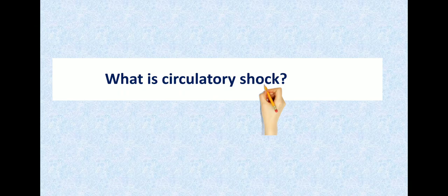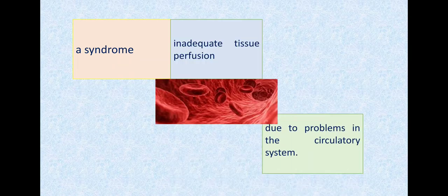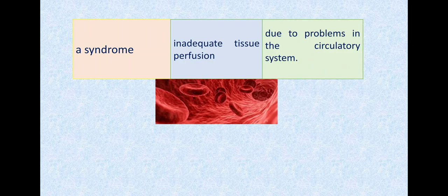The most commonly asked question in viva: define circulatory shock. Shock is a syndrome, a group of symptoms or signs occurring together. Circulatory shock is a syndrome of inadequate tissue perfusion due to problems in the circulatory system, meaning the tissues are not receiving enough blood or adequate oxygen and nutrients.